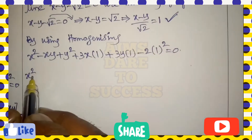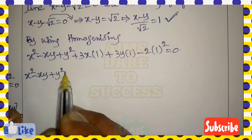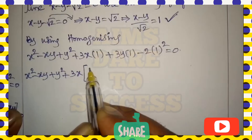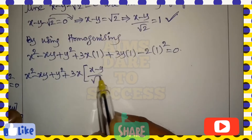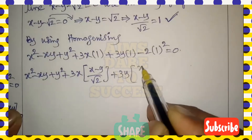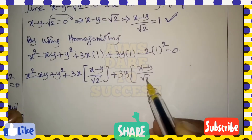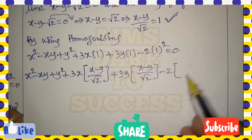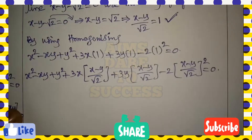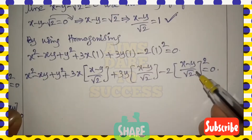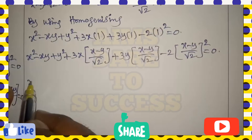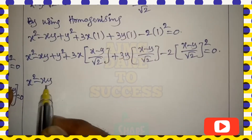Substituting, we get: x² - xy + y² + 3x · (x - y)/√2 + 3y · (x - y)/√2 - 2 · [(x - y)/√2]² = 0. Next, we expand the whole square term.